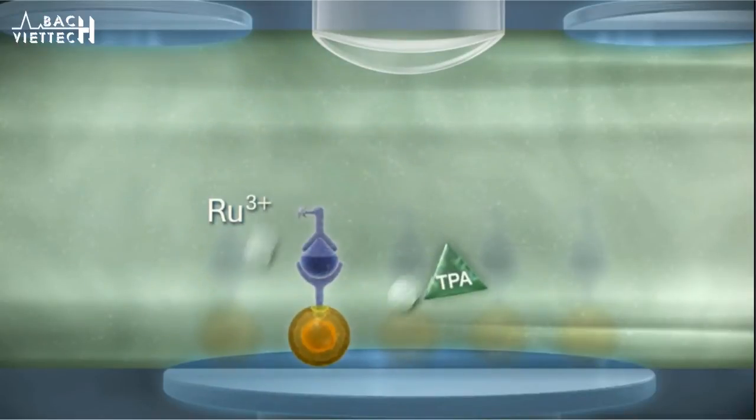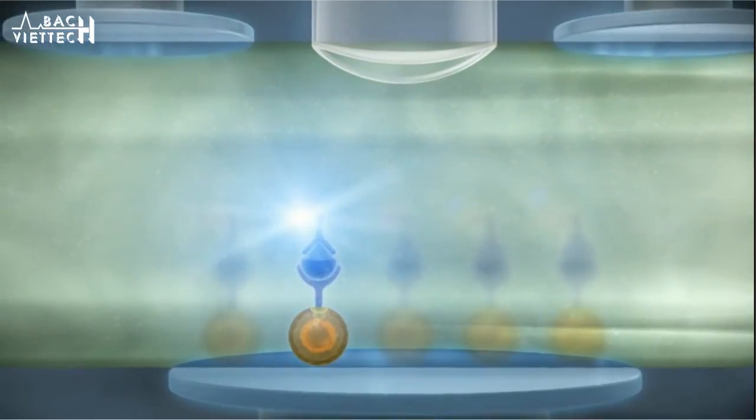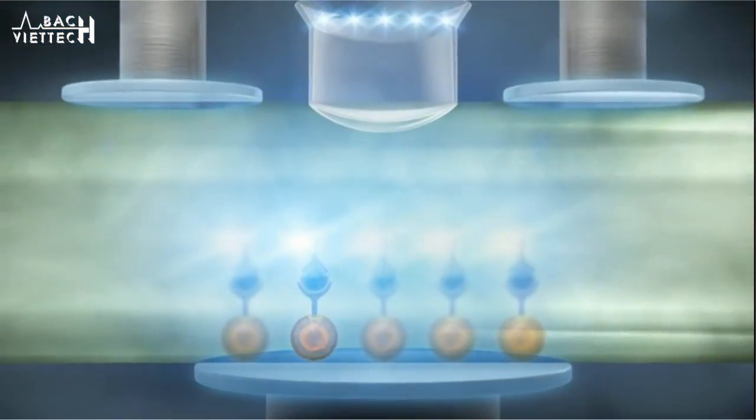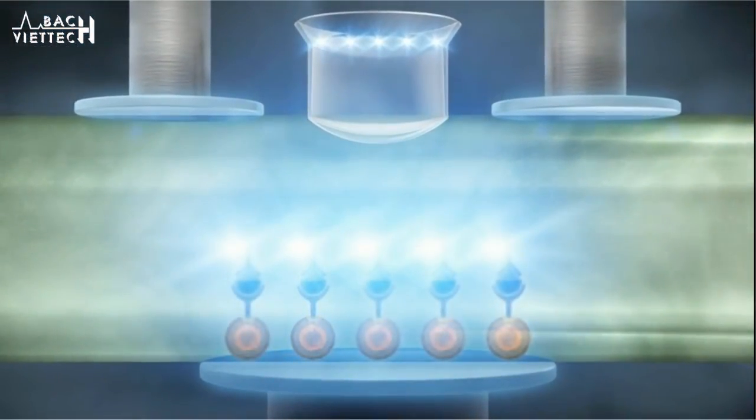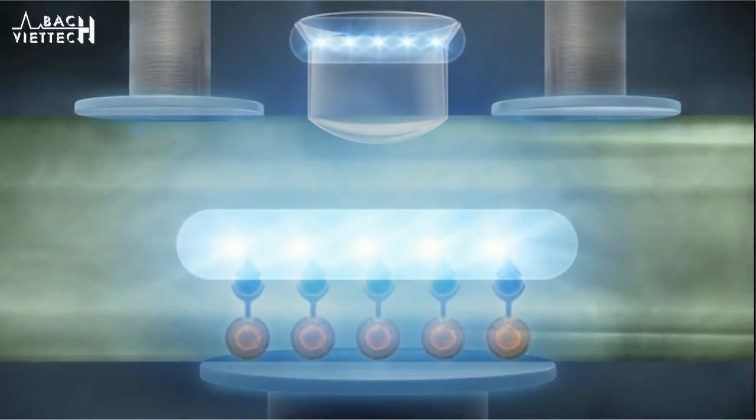The cycle of electrochemiluminescence repeats as long as voltage is applied, resulting in the amplification of the light signal. The emitted light is detected by a photomultiplier. The ECL process is complete.